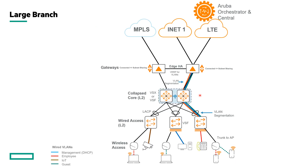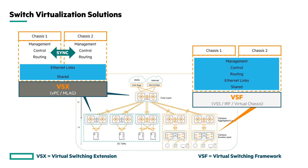Let's look at the switching design in more depth. In the large branch, we have a collapsed core and a wired access layer, both layer 2 switches in the reference architecture so that segmentation is handled up at the gateways. There won't be any SVI configuration outside of a management SVI on any of the devices. We achieve a non-blocking layer 2 environment using multi-chassis LAGs with LACP. At the collapsed core, the key design decision is whether to use VSX or VSF, which mainly comes down to platform selection — VSX for the 8000 series and VSF for the 6000 series CX switches.